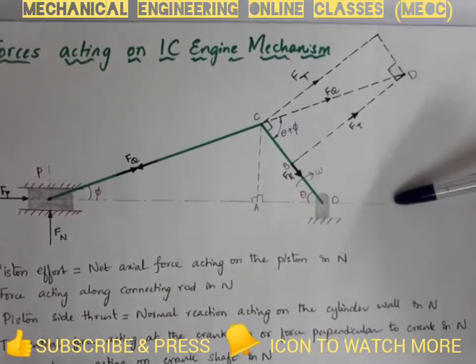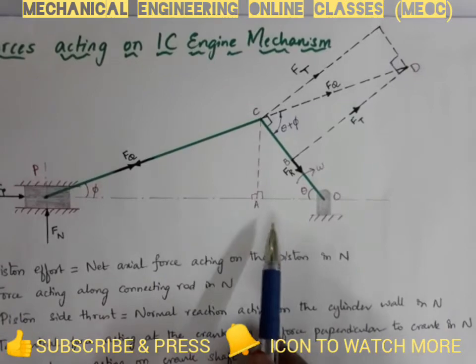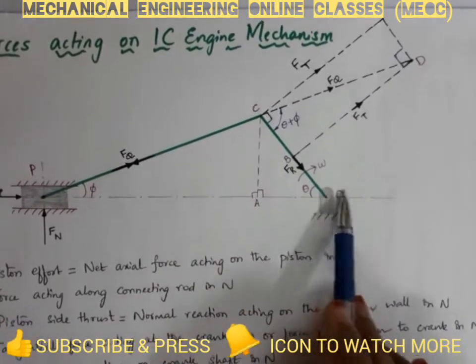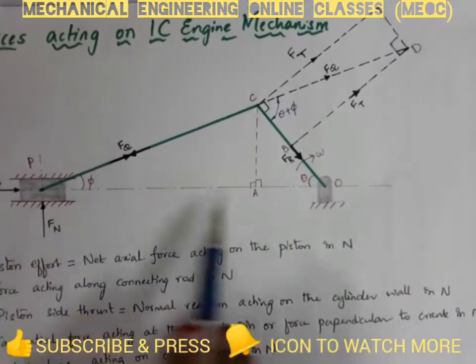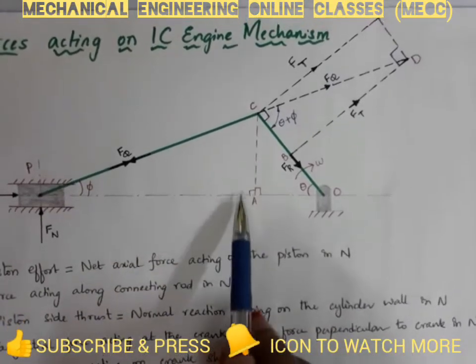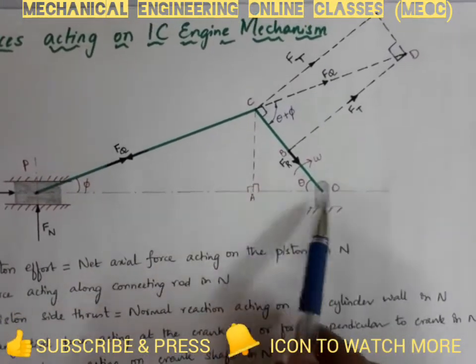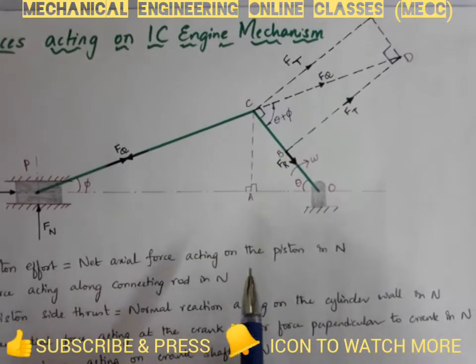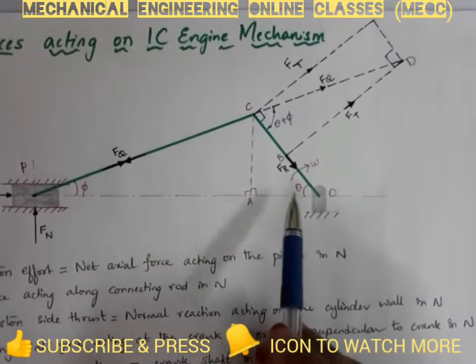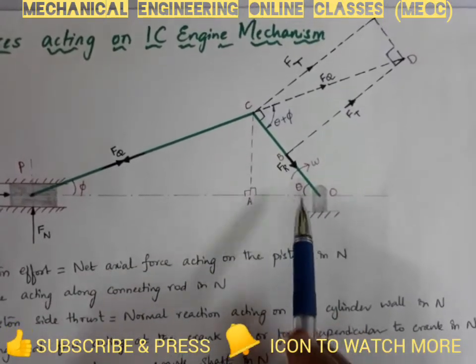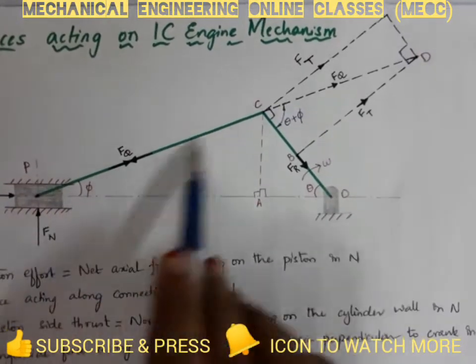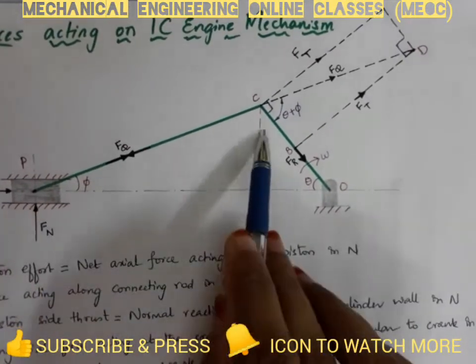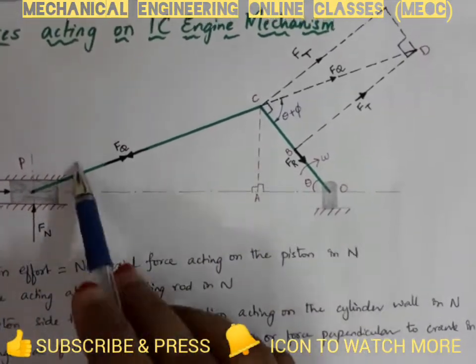From triangles OAC and PAC, we have CA. From triangle OAC, CA can be written as R into sine theta. From triangle PCA, we can write CA as small L, the length, into sine phi.